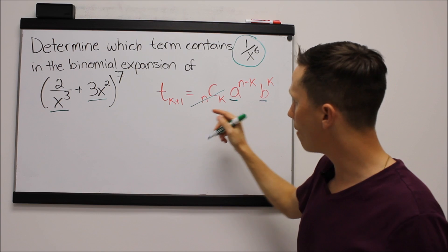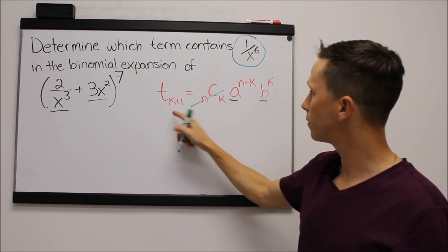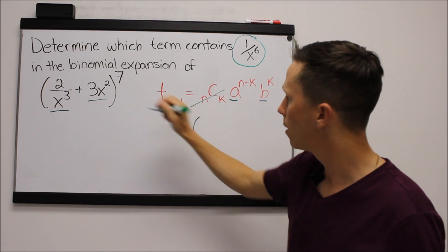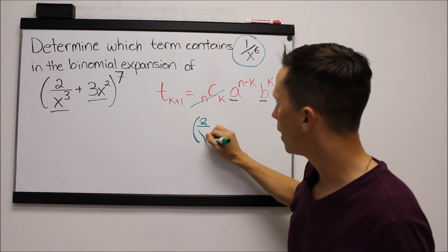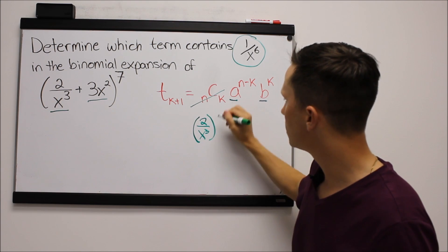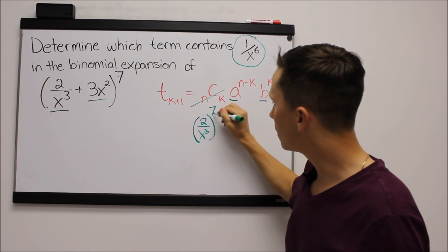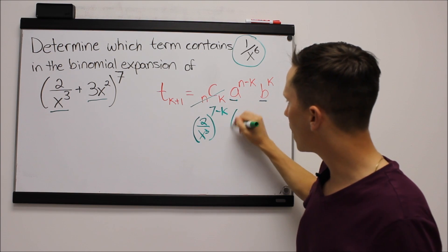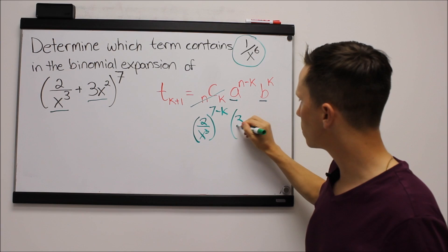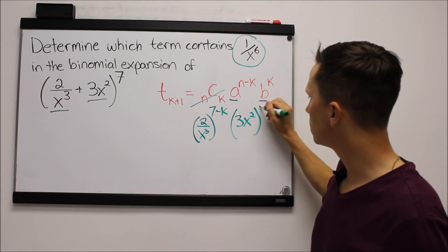So if we think about this, every term, every k plus first term is going to include a, which is 2 over x to the 3, to the n. n we said was 7, so 7 minus k, times b, which is 3x squared to the k.